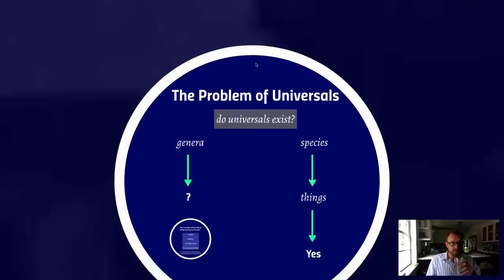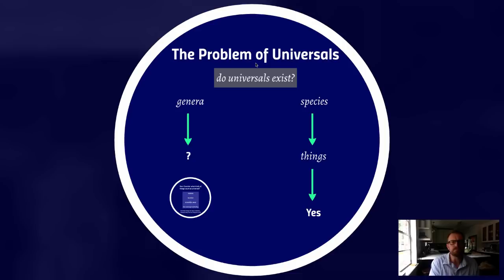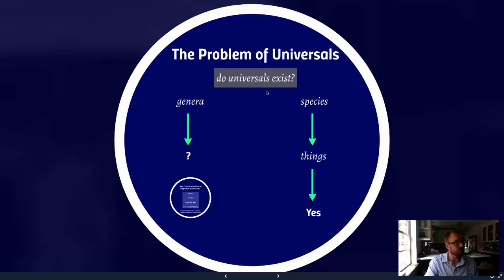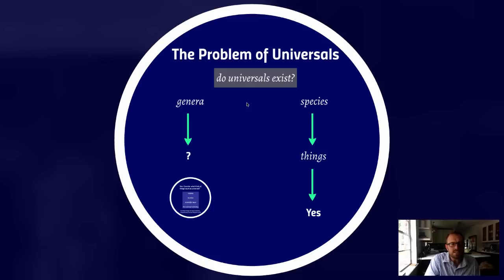Now, we're going to be talking about the problem of universals. The key problem is whether or not universals exist. There are different ways to attack this, but one question is: what do we mean by existence? Another is: what do we mean by universals or particulars? An important distinction we'll see Abelard discuss is the distinction between genera and species — or in modern parlance, genus versus species.